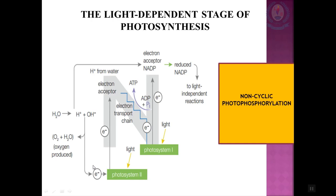At the same time, electrons in PS1 are excited by light and collected by an electron acceptor. Electrons are transferred along an electron transport chain and collected by NADP (nicotinamide adenine dinucleotide phosphate). The NADP also collects hydrogen ions from the dissociated water to form reduced NADP. The reduced NADP and ATP produced during non-cyclic photophosphorylation provide a source of reducing power and energy respectively in the light-independent reactions of photosynthesis to make glucose.